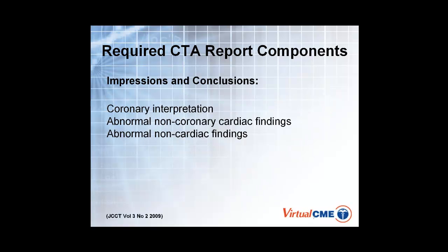And then finally, the impression and conclusions — you want to summarize your coronary interpretation, your abnormal non-coronary cardiac findings, and then your abnormal non-cardiac findings, such as a finding in the lung or the esophagus.